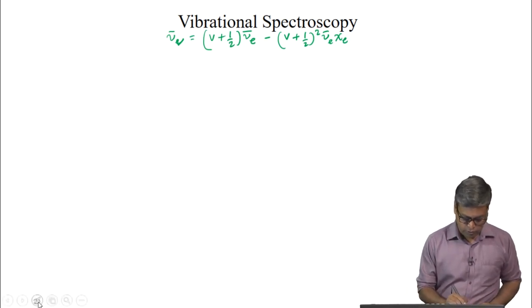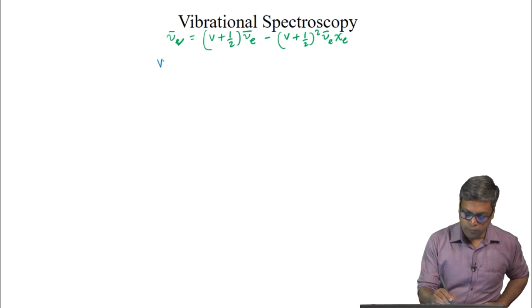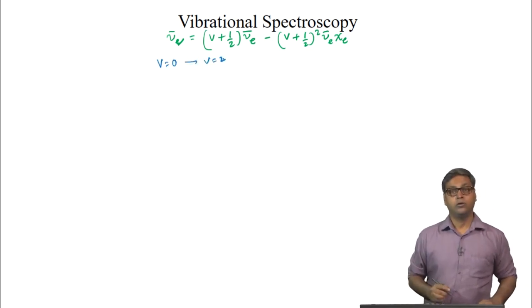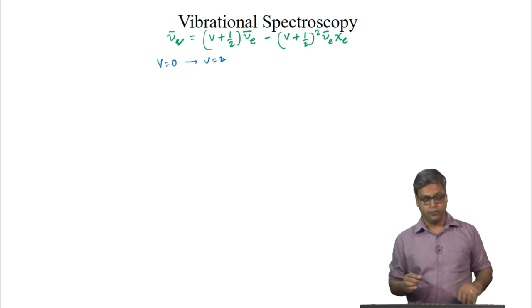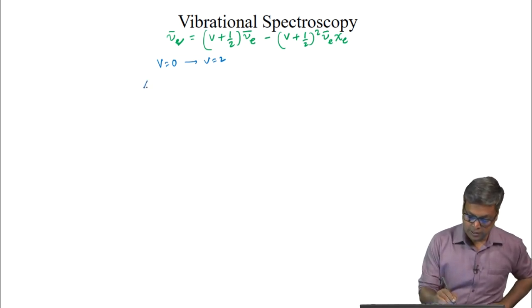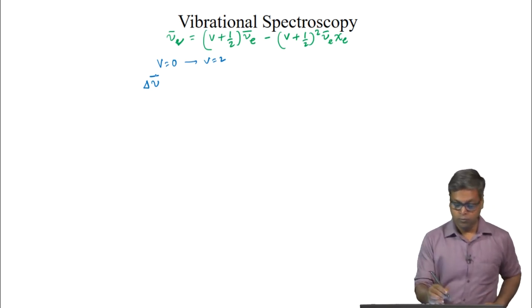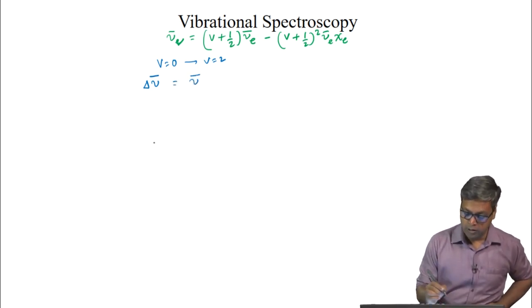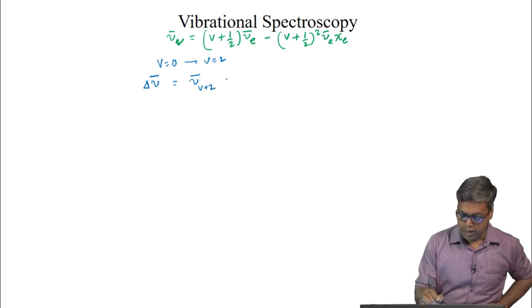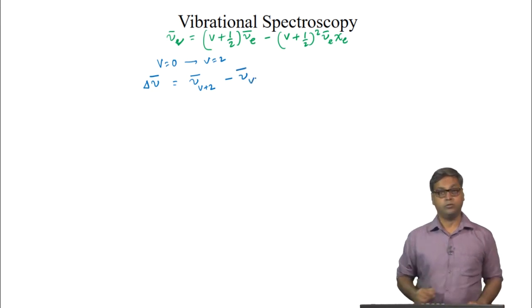Because the first overtone is from v=0 to v=2, the energy difference delta nu-bar for the first overtone will be nu-bar(v+2) minus nu-bar(v).